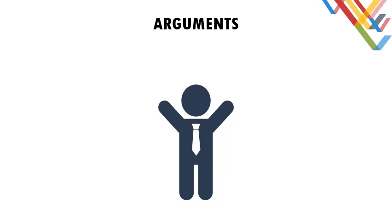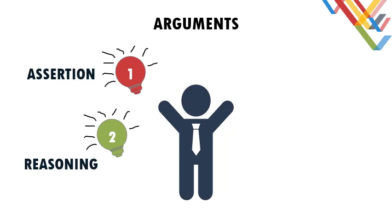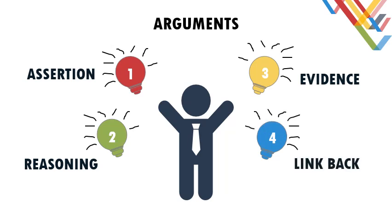Now let's overview the skeleton or the elements of arguments in debate. First you need to provide the assertion. The idea of arguments in debate contains: first, assertion; second, reasoning; third, evidence; and fourth, link back. We call it AREL — assertion, reasoning, evidence, and link back. In every aspect when you try to argue, you need to provide these four elements.